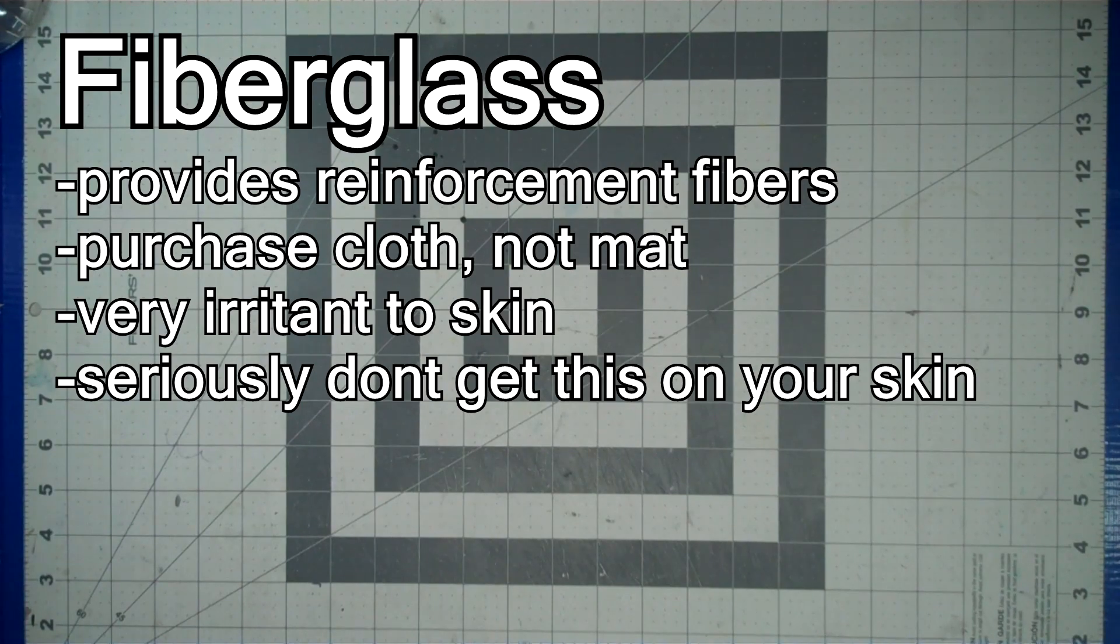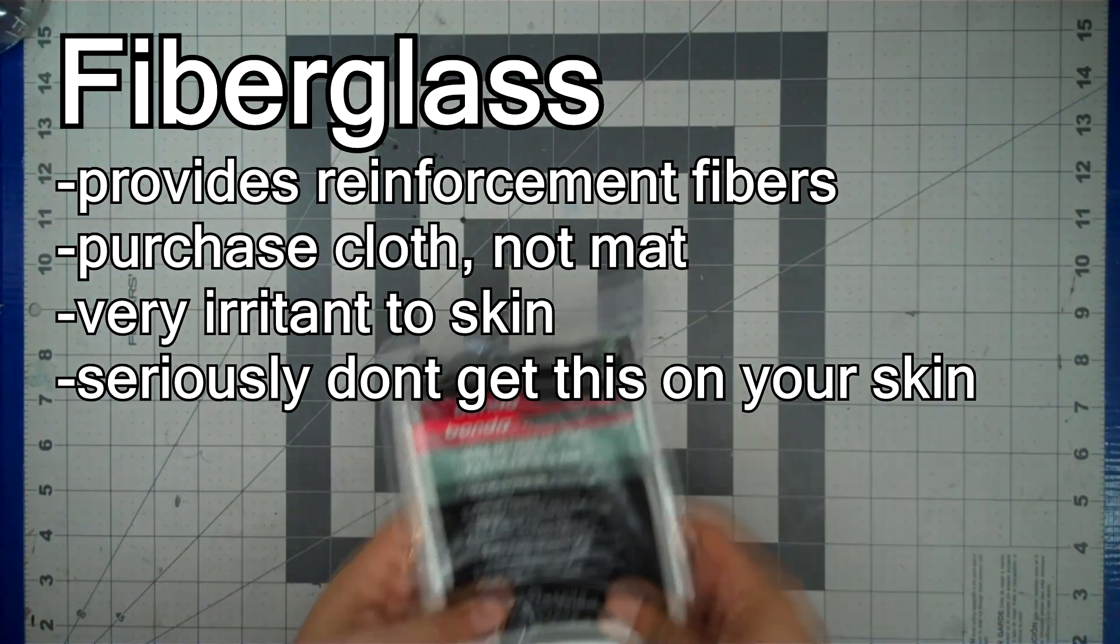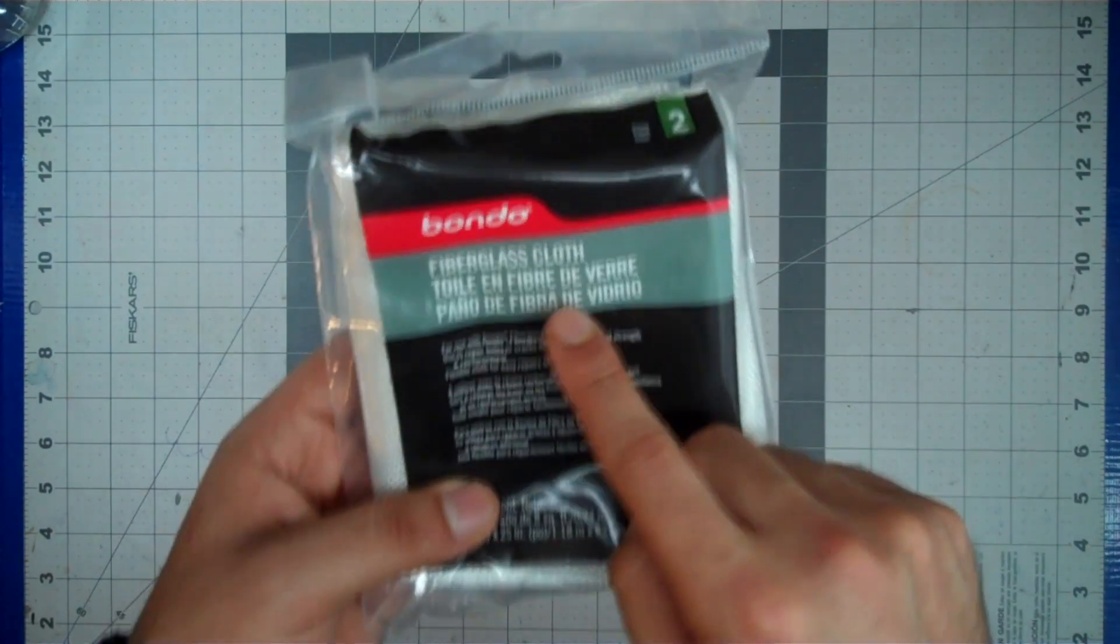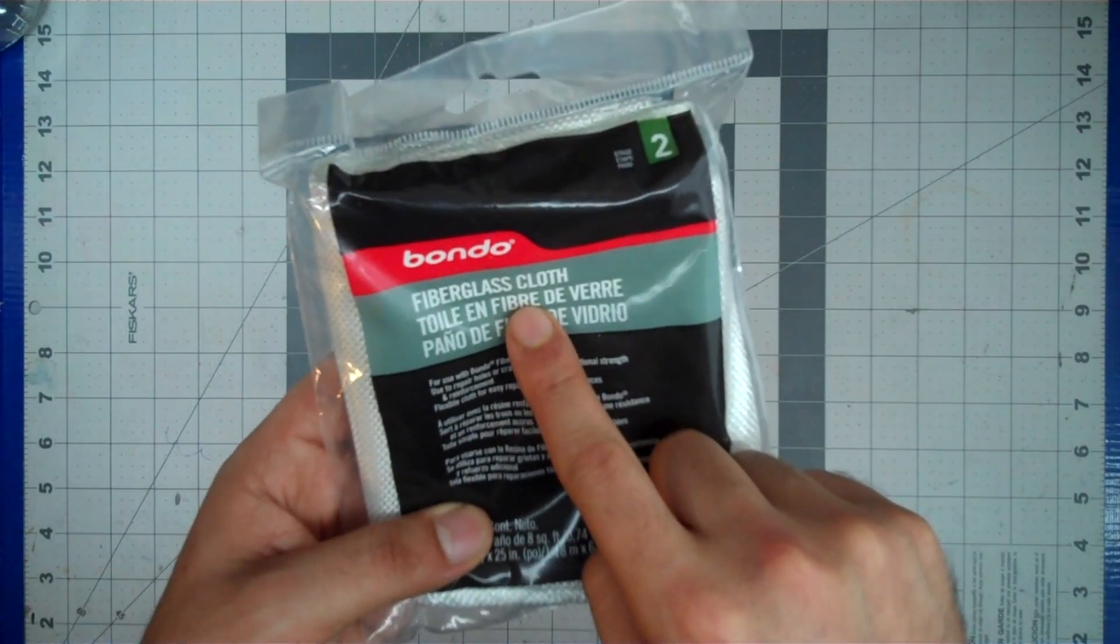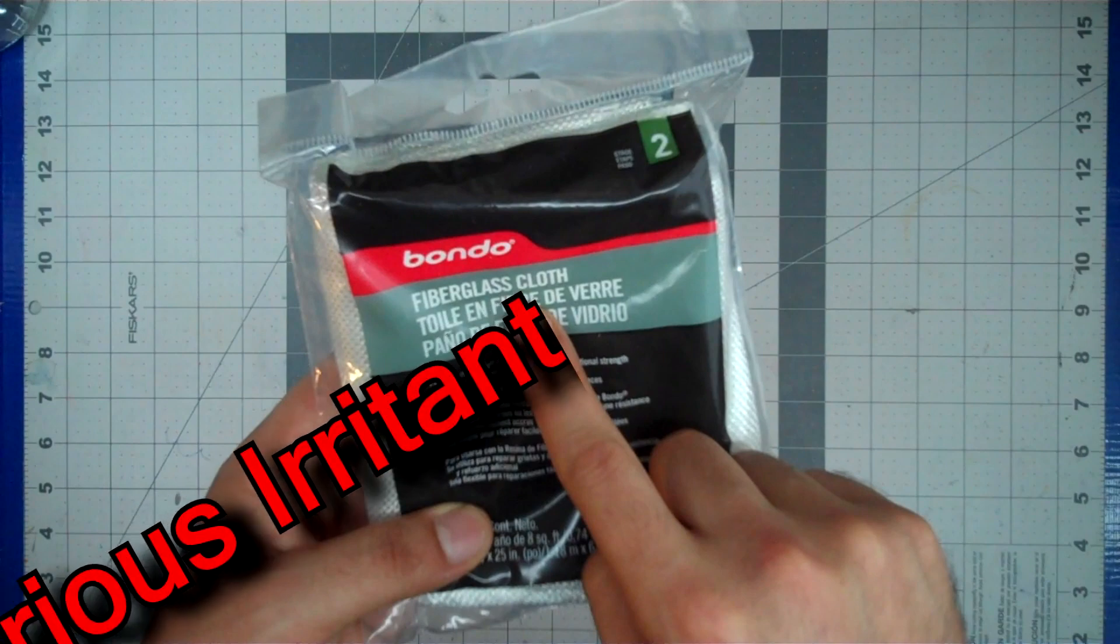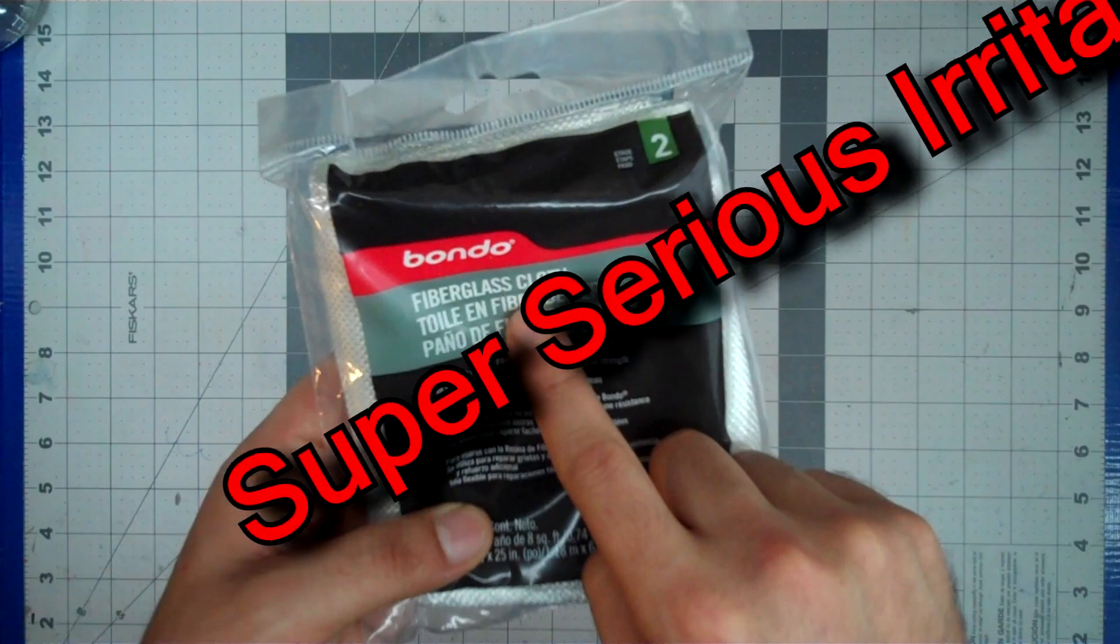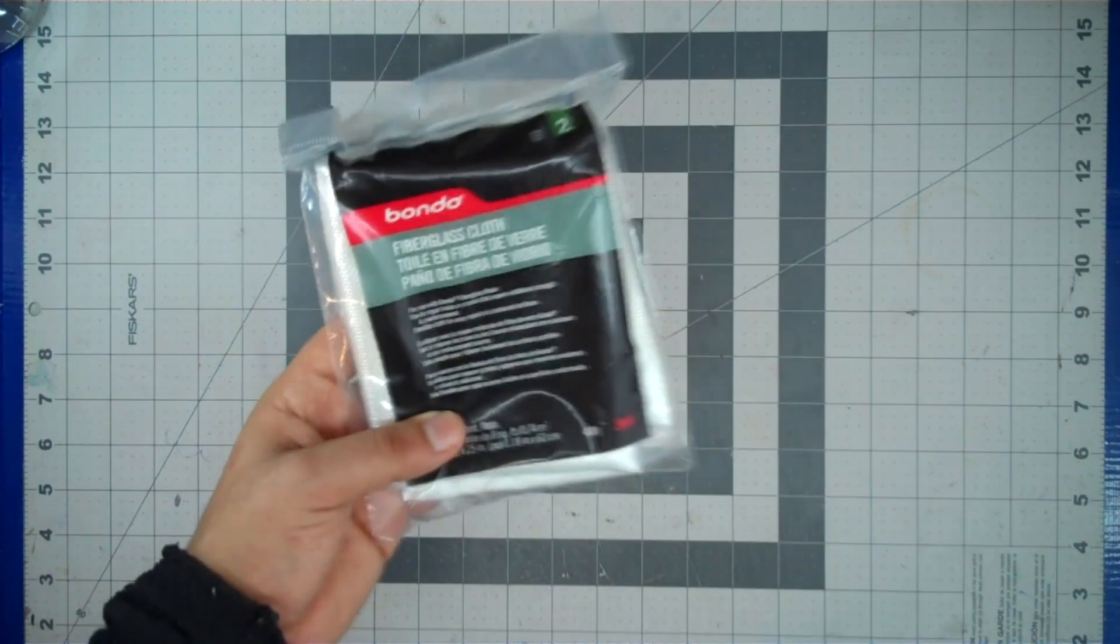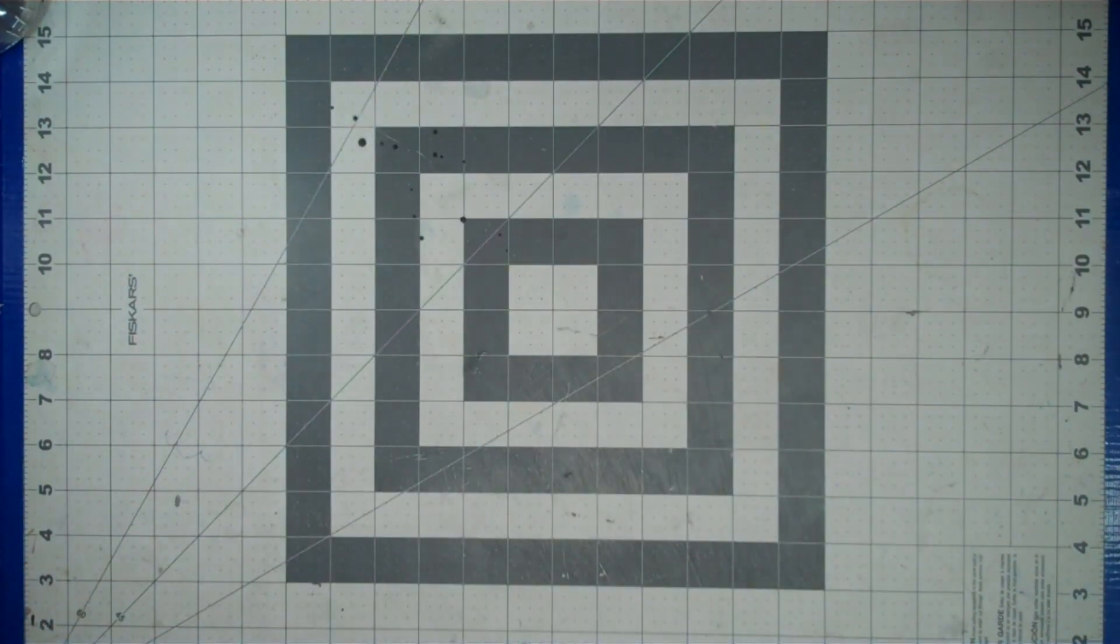Fiberglass is going to be one half of the materials needed to reinforce the paper part. Buy the stuff that comes labeled as fiberglass cloth, as the fibers are woven together and will prove easier to work with. Be extremely careful when handling this, as the fibers can be extremely irritating and will make your life hell if they get into your soft fleshy bits. Anyone who's installed fiberglass insulation will know this pain.